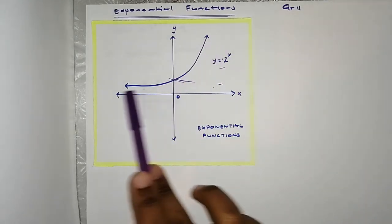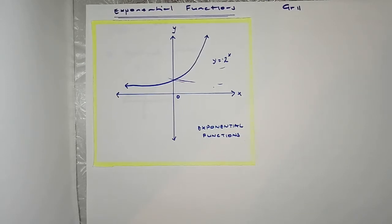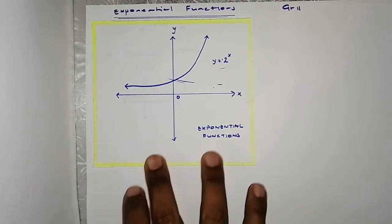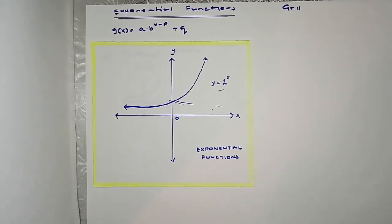This is an example of an exponential function, and we're going to look at different maneuvers that happen on this function and the effect that those maneuvers have on the equation of the function. We're going to consider both the vertical shift and the horizontal shift. The equation we're going to use is: G of X equals A multiplied by B to the power of X minus P, plus Q.